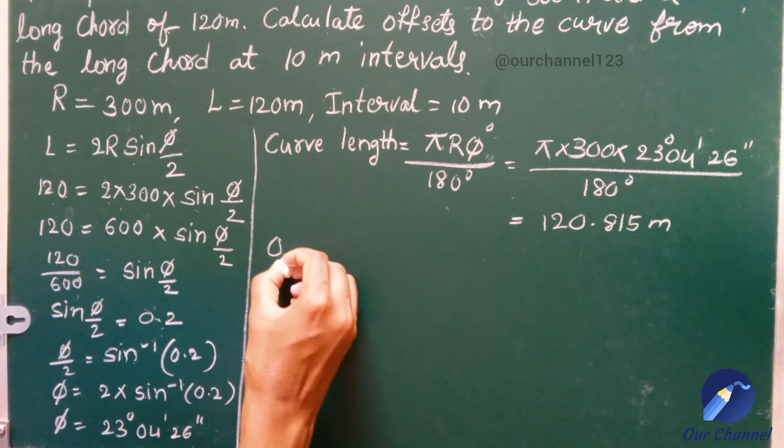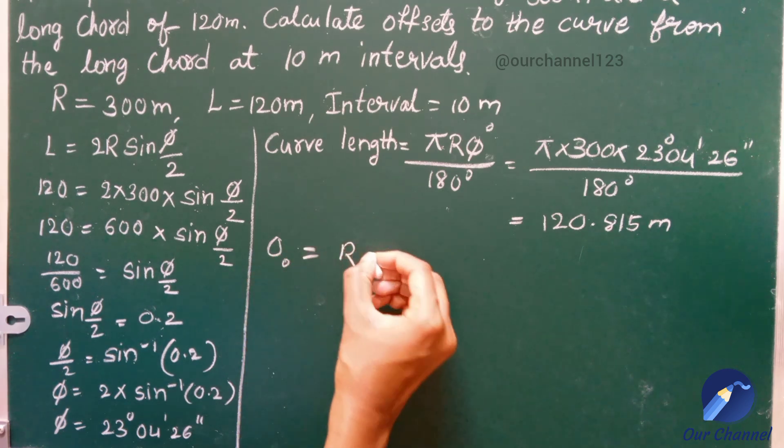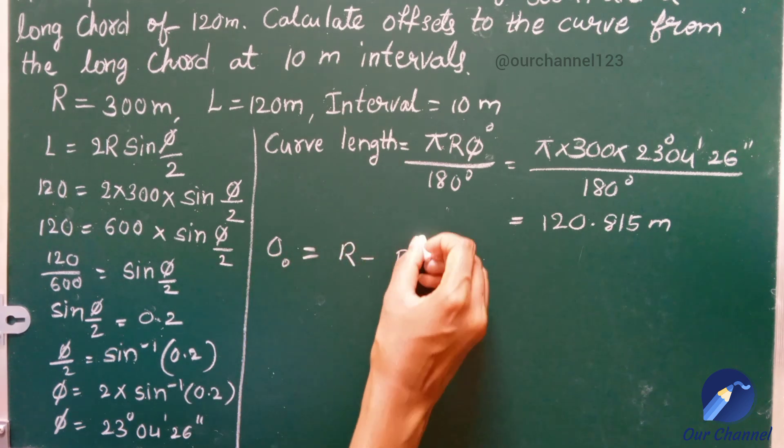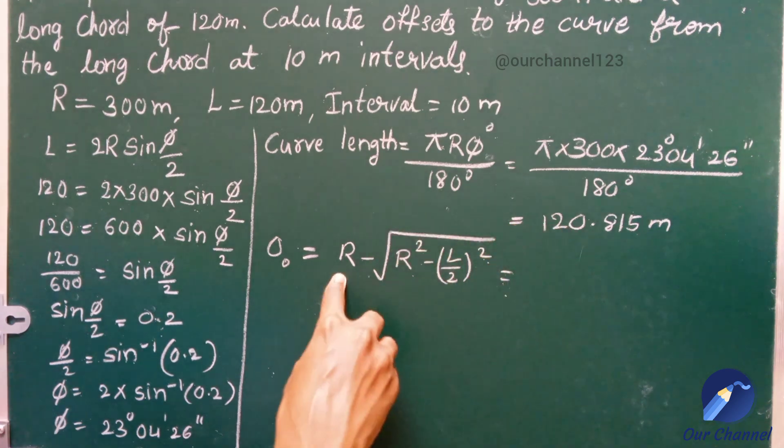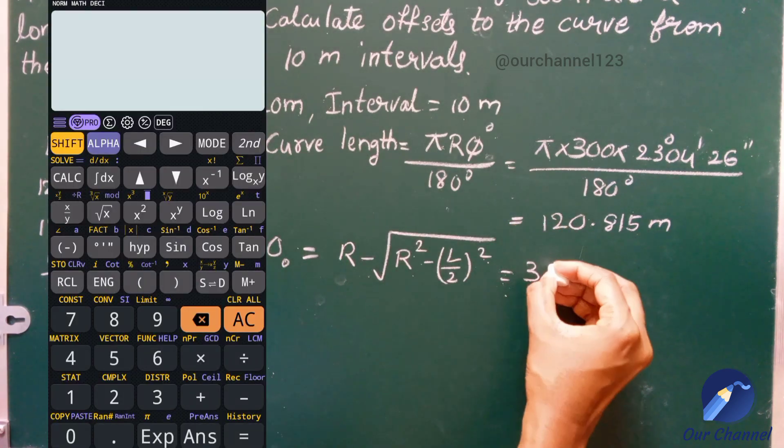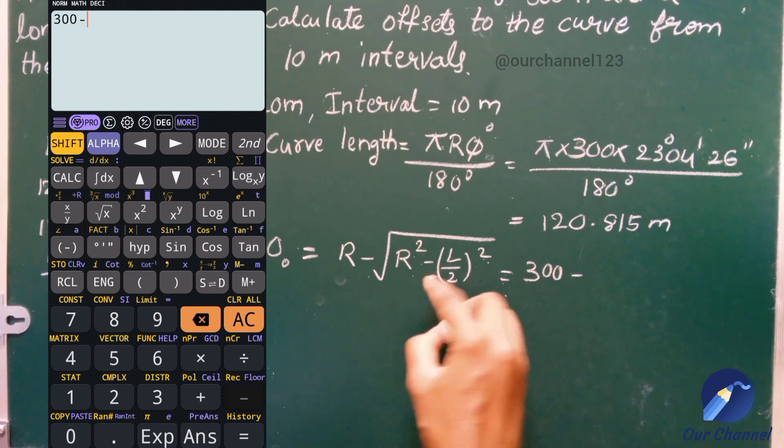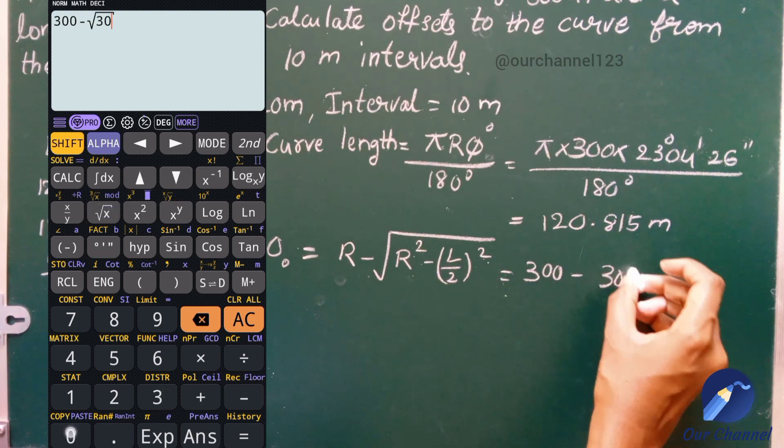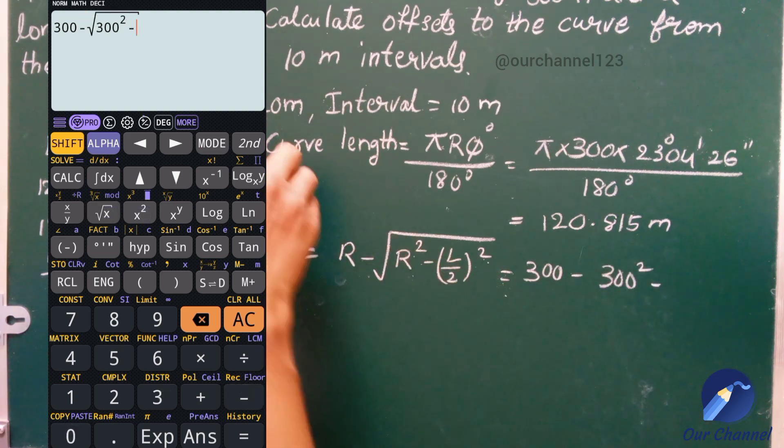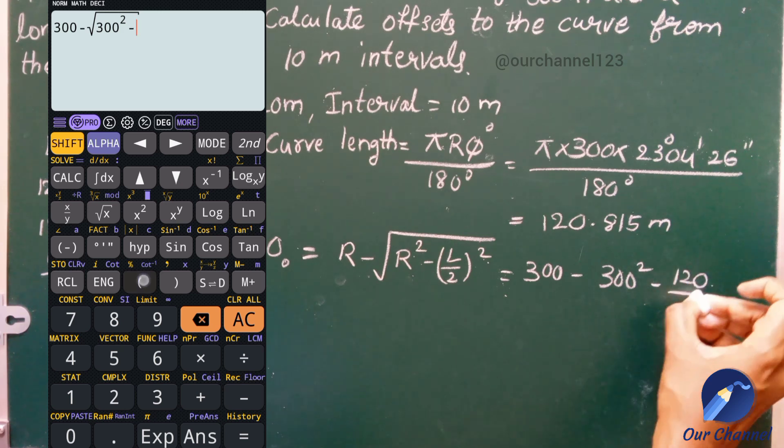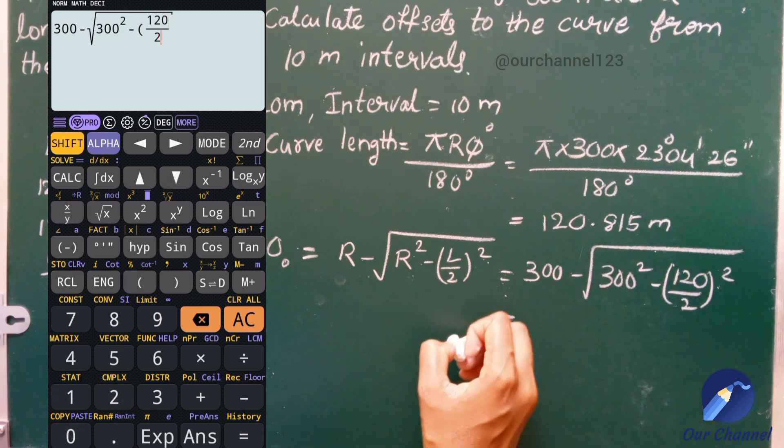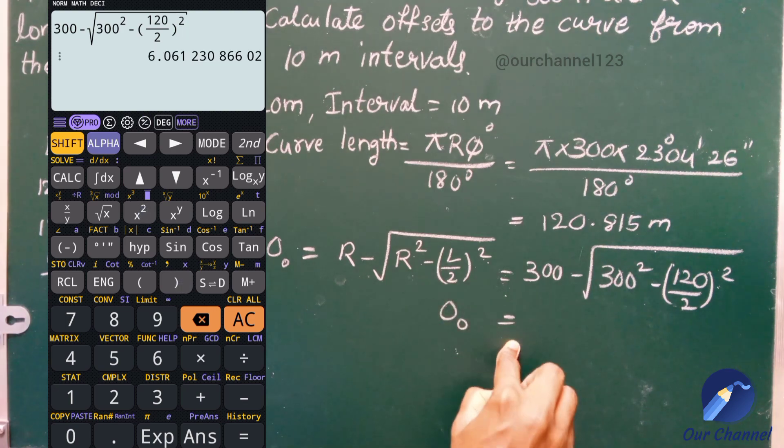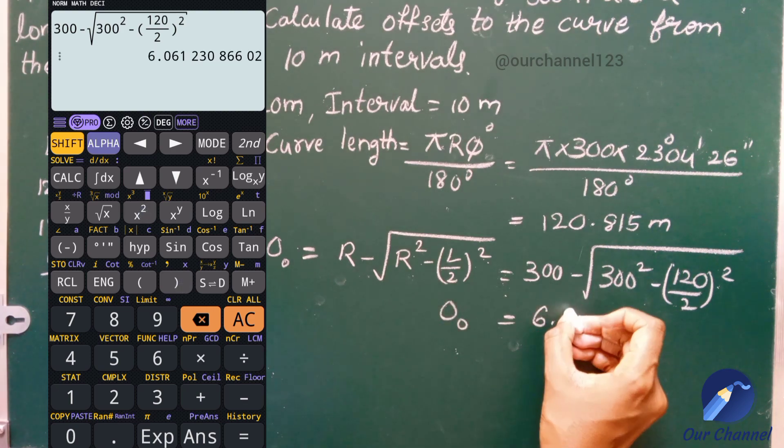We should calculate the mid-ordinate. Mid-ordinate O₀ is equal to R minus square root of R square minus (L/2) whole square. R is equal to 300 minus square root of 300 square minus length of the long chord is 120 meters by 2 whole square. We will get the answer as 6.061 meters.